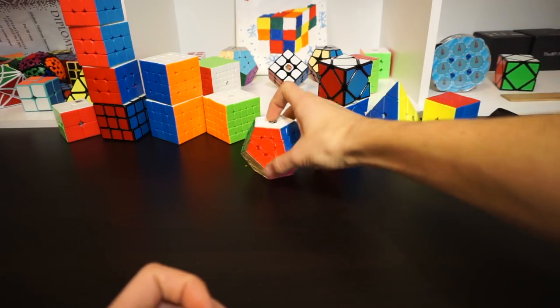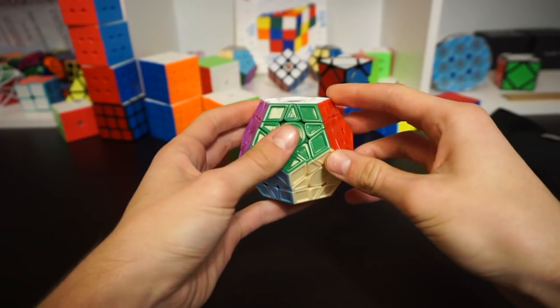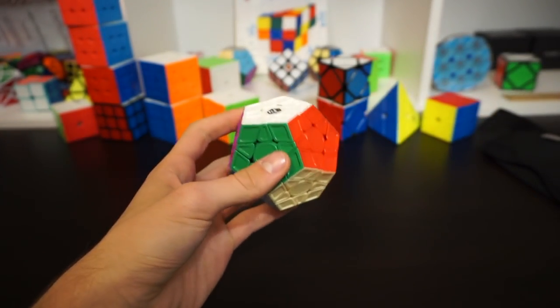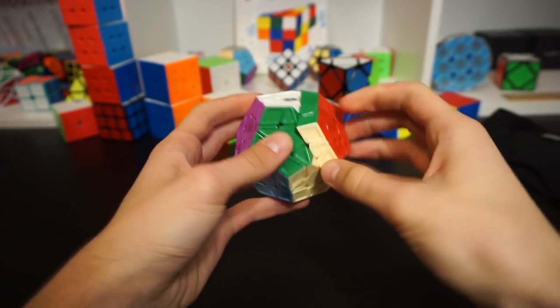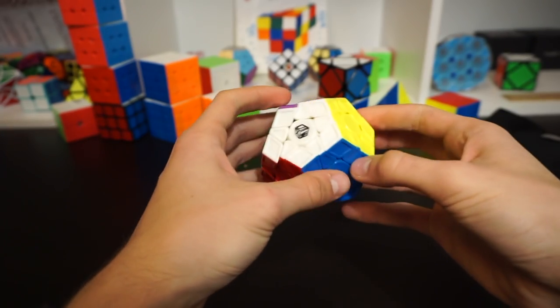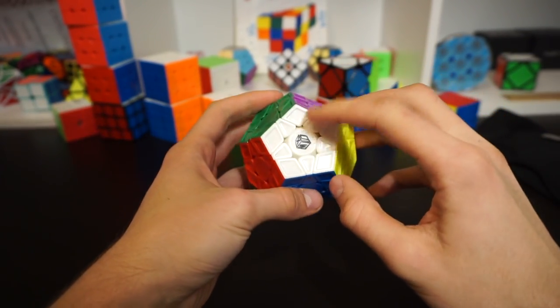Next up is megaminx and my goal is to get a sub-120 average because there are two rounds and that is more than enough to get a PB. Although I haven't practiced, I will revise the algs and I think it's going to be okay. This is the Galaxy version 2.